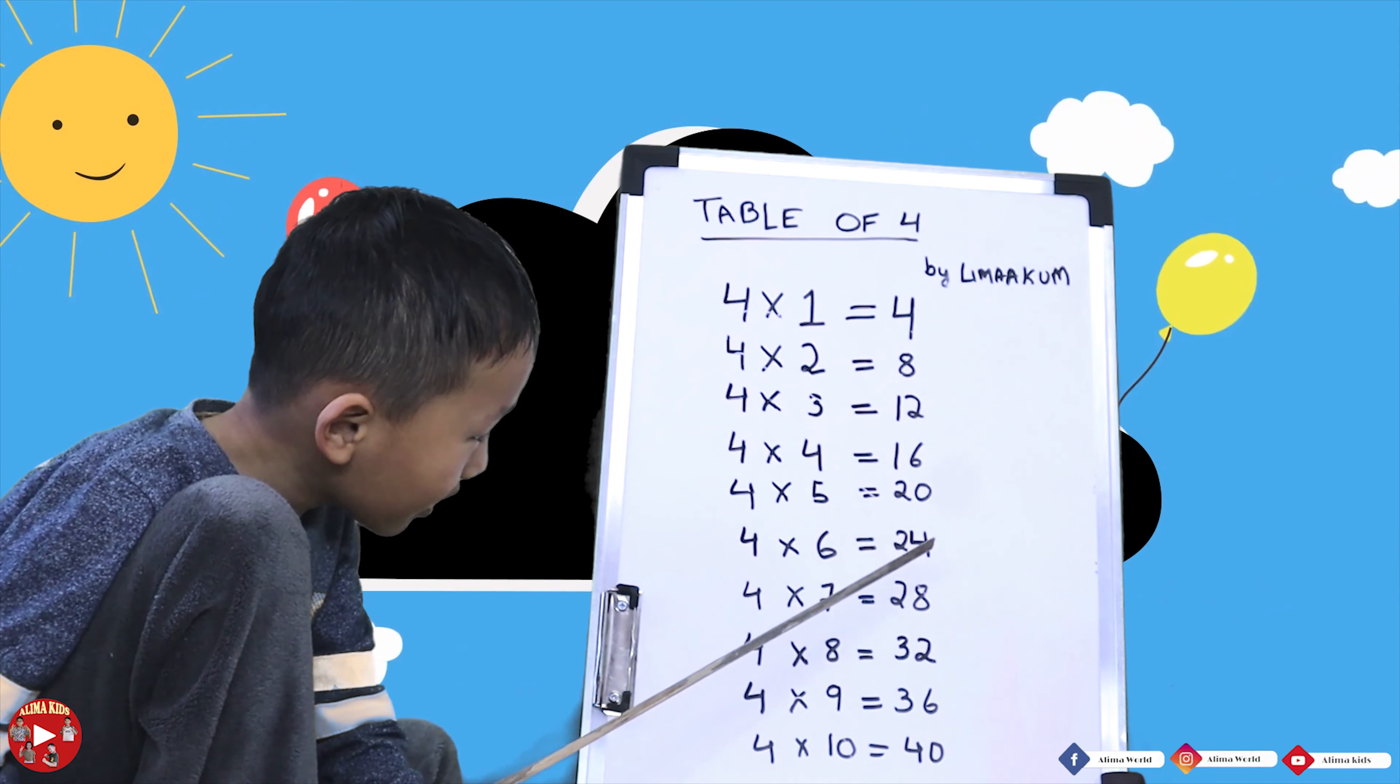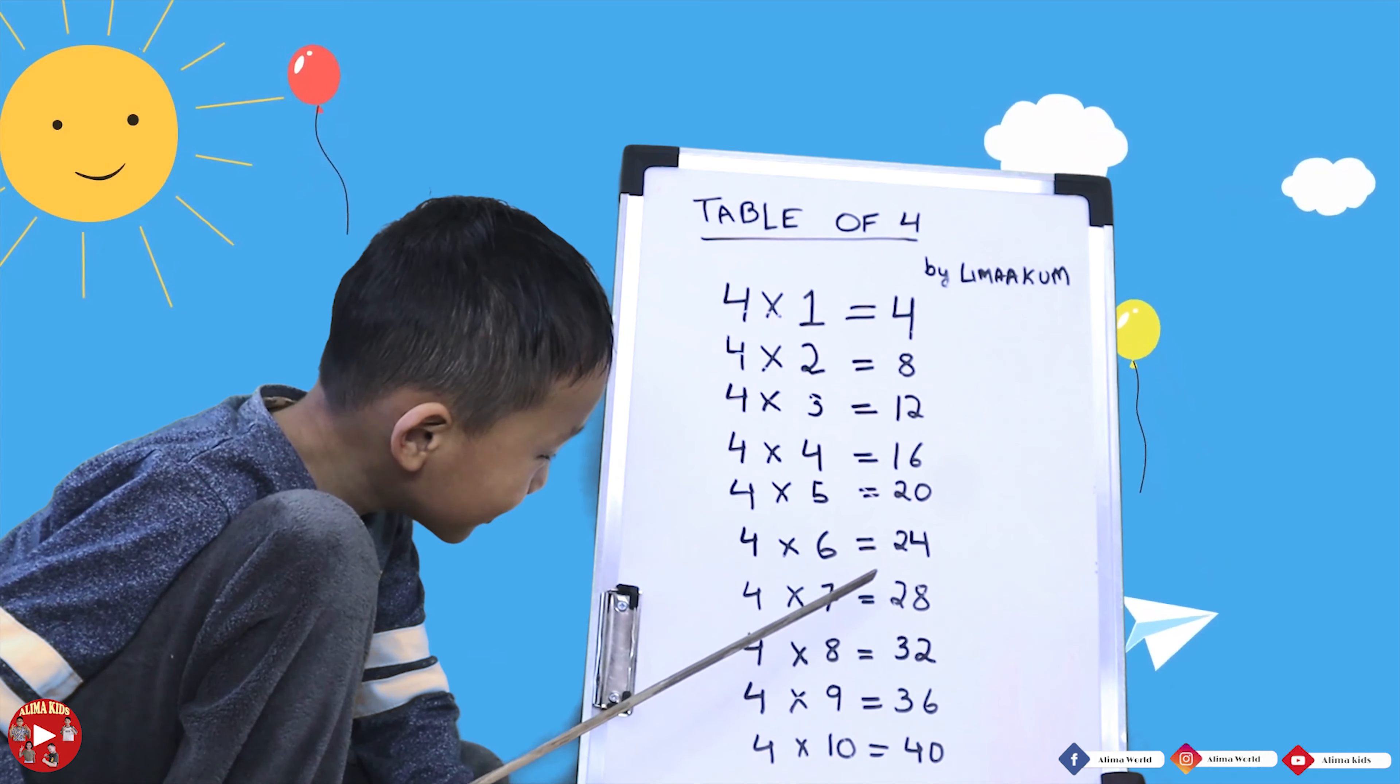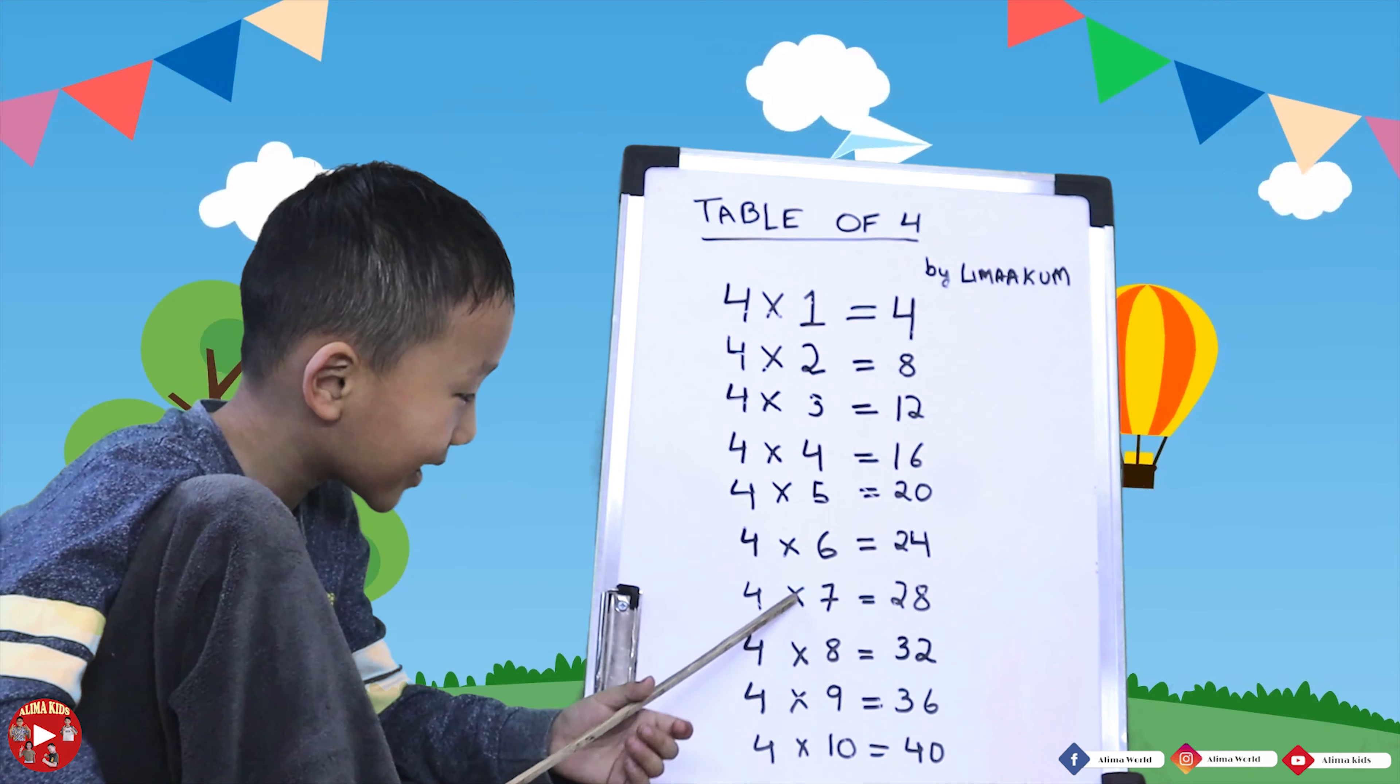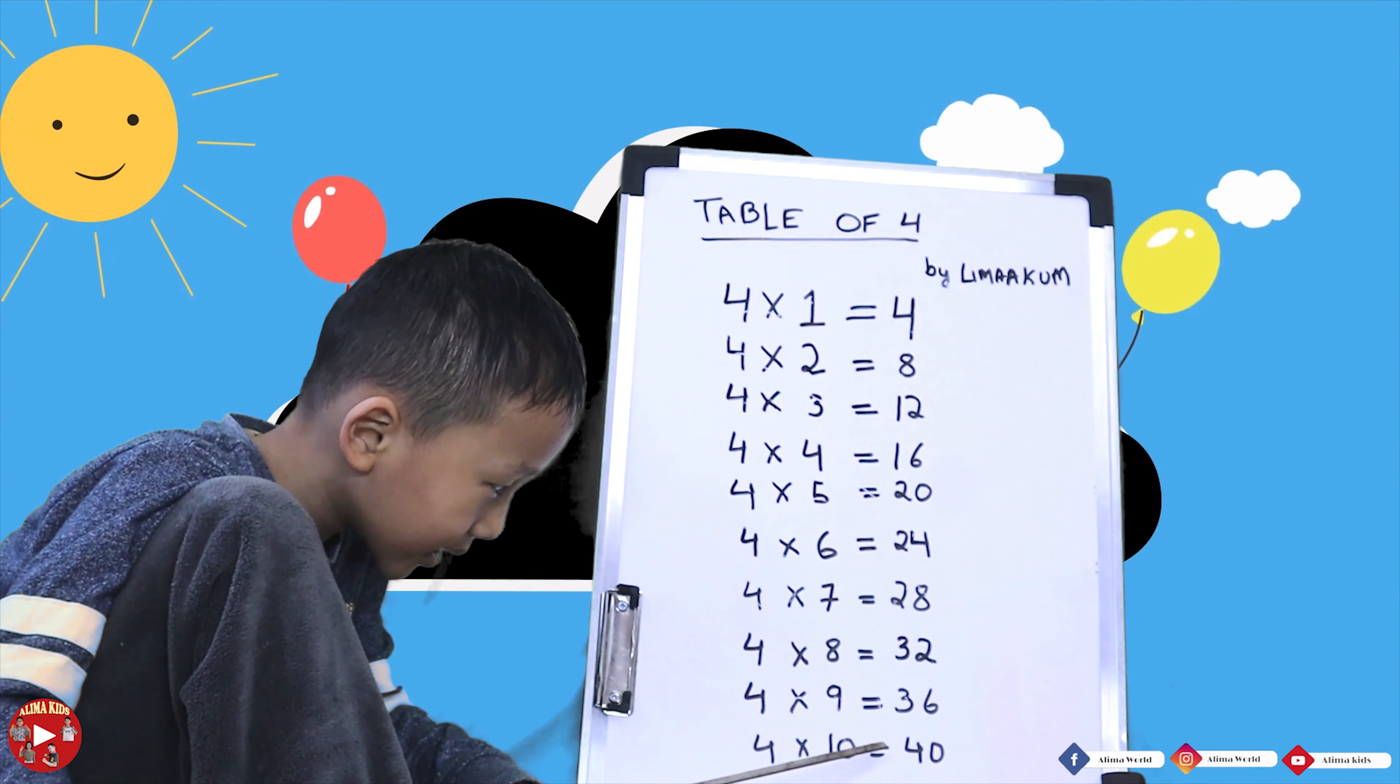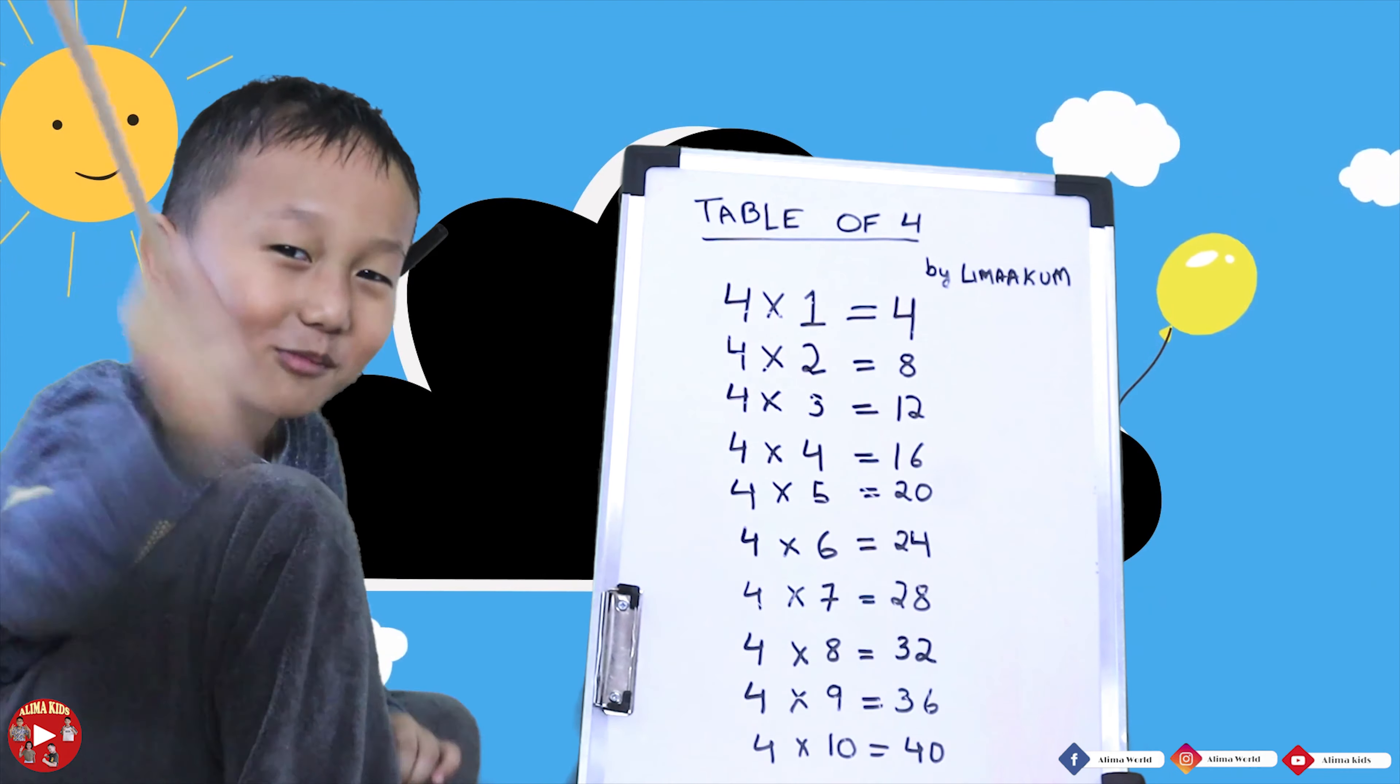Four fives are twenty. Four six are twenty-four. Four sevens are twenty-eight. Four sevens are twenty-eight. Oh, I'm ready to do that one! Four eights are thirty-two. Four nines are thirty-six. Four tens are forty. I'm ready to do it. Let's do it.